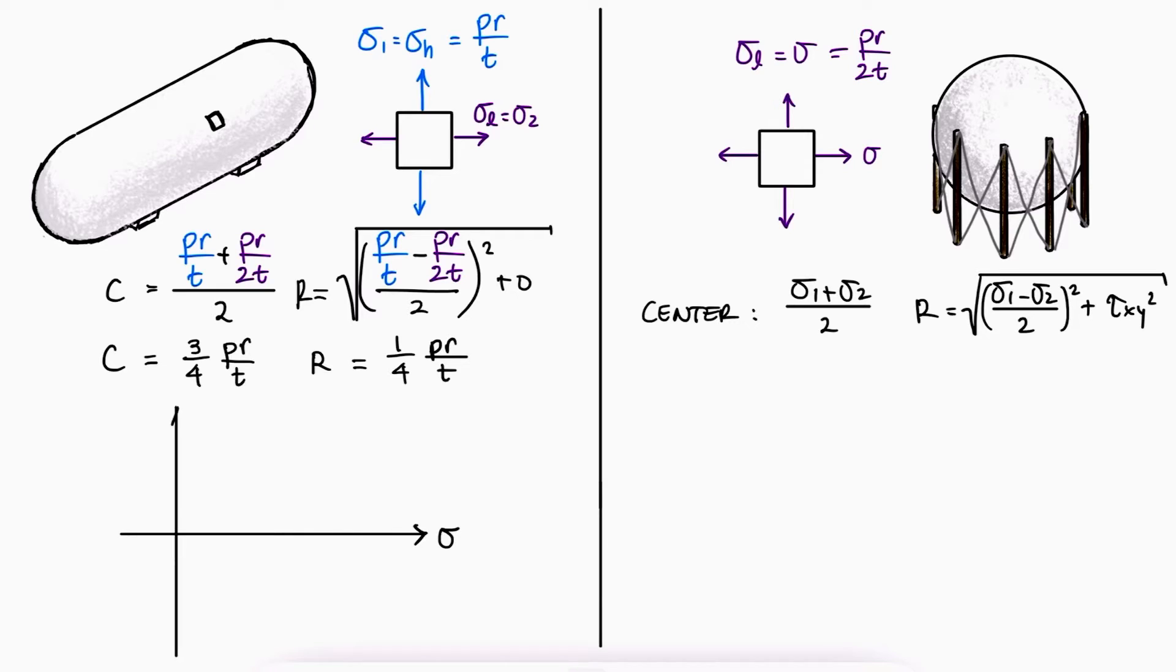Since one of the stresses is twice the value of the other stress, the Mohr's circle will always look the same. One given stress will be at pr over 2t, the other at twice that value at pr over t, and the center of the circle right at the middle. The radius is of course the distance from the center to either given stress, and therefore the maximum shearing stress has that same value.